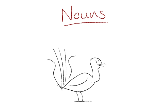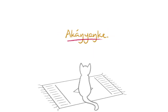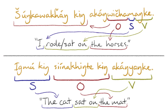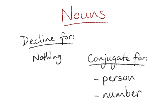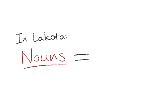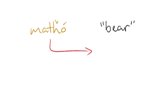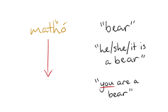Nouns in a Lakota sentence are entirely optional, in very much the same way Japanese works. If it's obvious from context what you're talking about, or if it was mentioned in a previous sentence, you don't have to mention it again. Nouns do not decline for grammatical case, which is why word order is slightly stricter for Lakota sentences. Nouns do conjugate according to person and number in very much the same way verbs do — in fact, it might be more grammatically accurate to call nouns in Lakota copulative verbs. For example, the common word for bear, matro, could also be translated as 'he, she, or it is a bear,' so to say 'you are a bear,' all you have to do is conjugate the noun to mayapro.